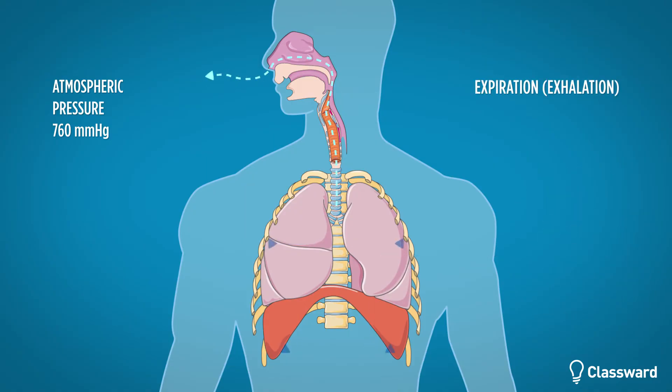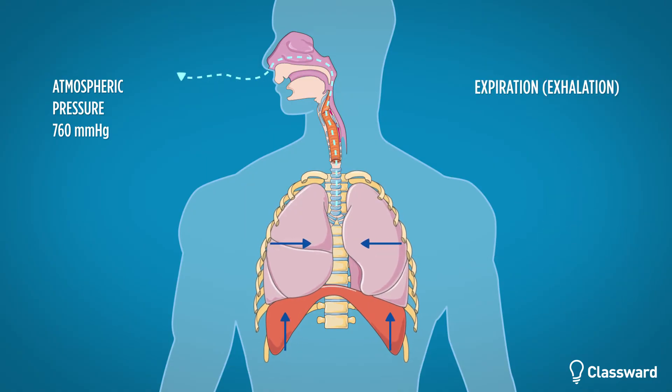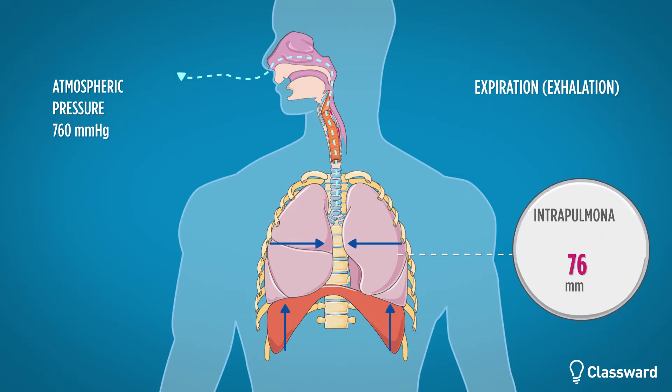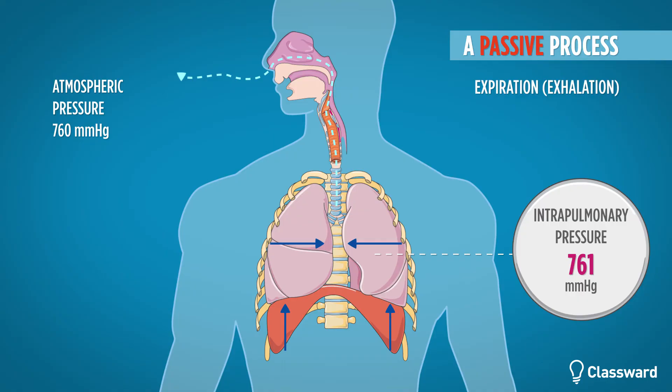During expiration, the intercostal muscles and the diaphragm relax, causing a decrease in intrapulmonary volume. As the volume decreases, there's an increase in intrapulmonary pressure to 761 mmHg. Air moves from higher pressure to lower pressure, and as a result, air is moved from the lungs out to the atmosphere. Due to the elastic recoil of the muscles relaxing, expiration is considered a passive process.